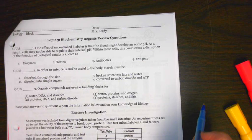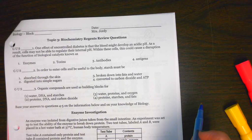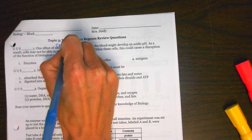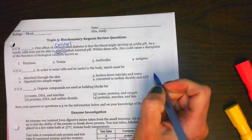It says, one effect of uncontrolled diabetes is that the blood might develop an acidic pH. As a result, cells might not be able to regulate—remember that word regulate means control—their internal pH.